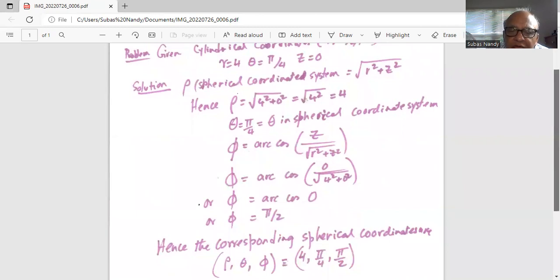Hence the corresponding spherical coordinates rho, theta, and phi are 4, pi by 4, and pi by 2.